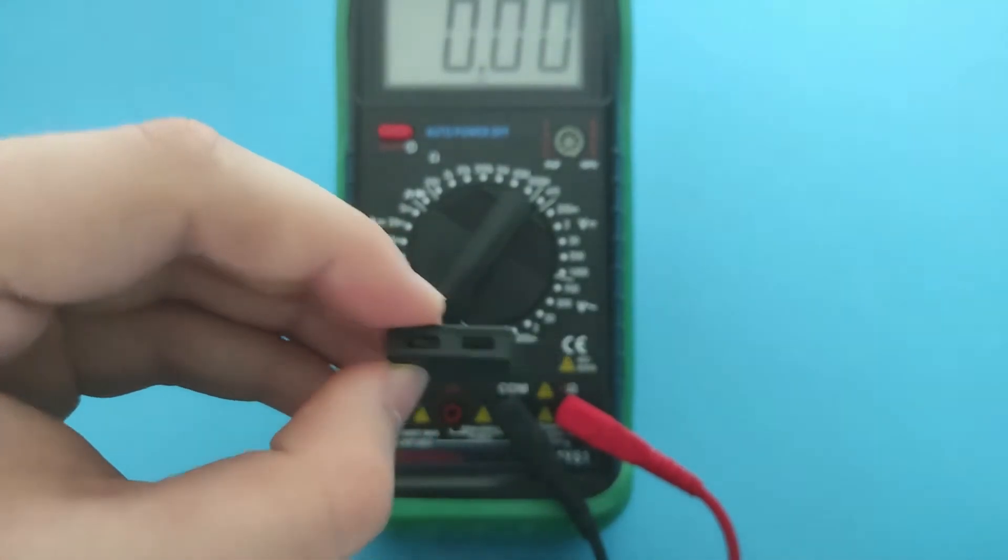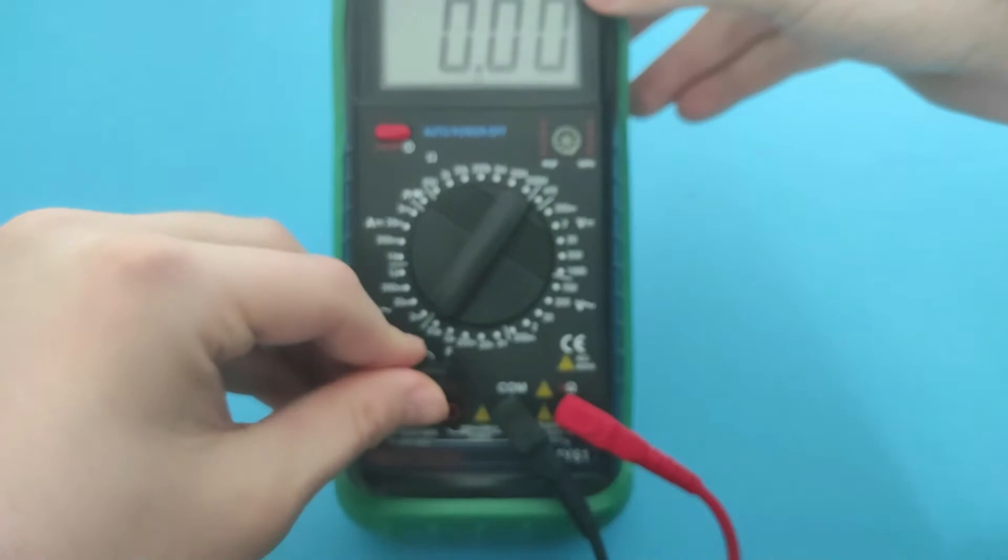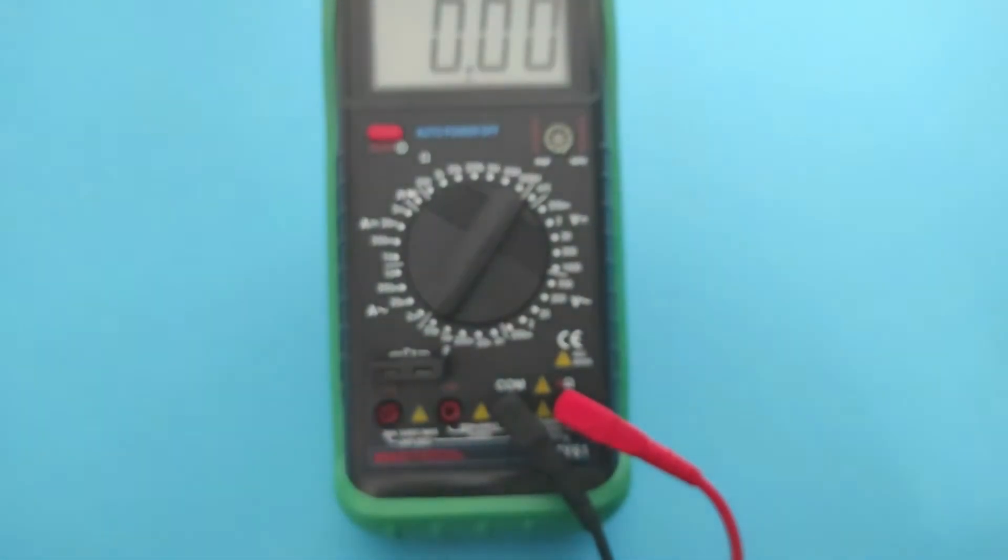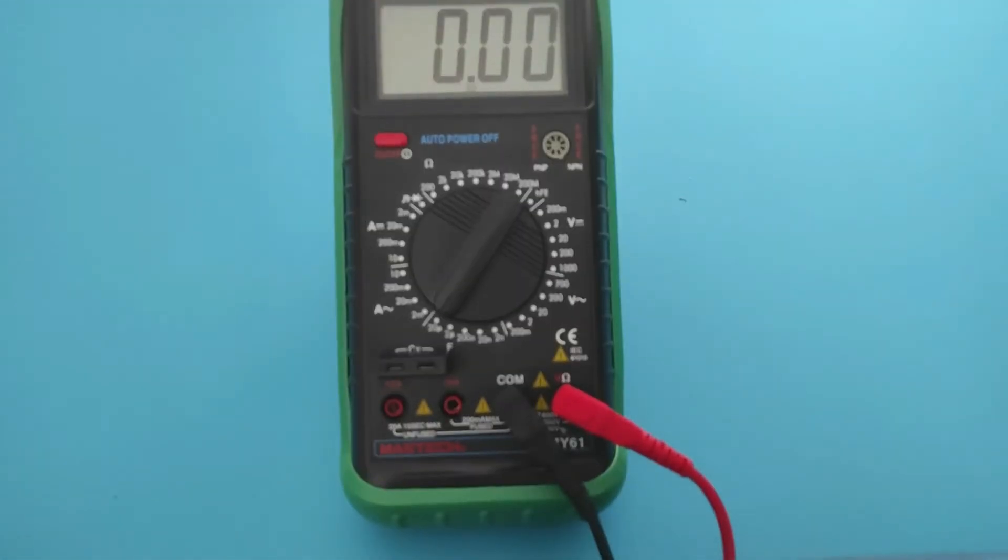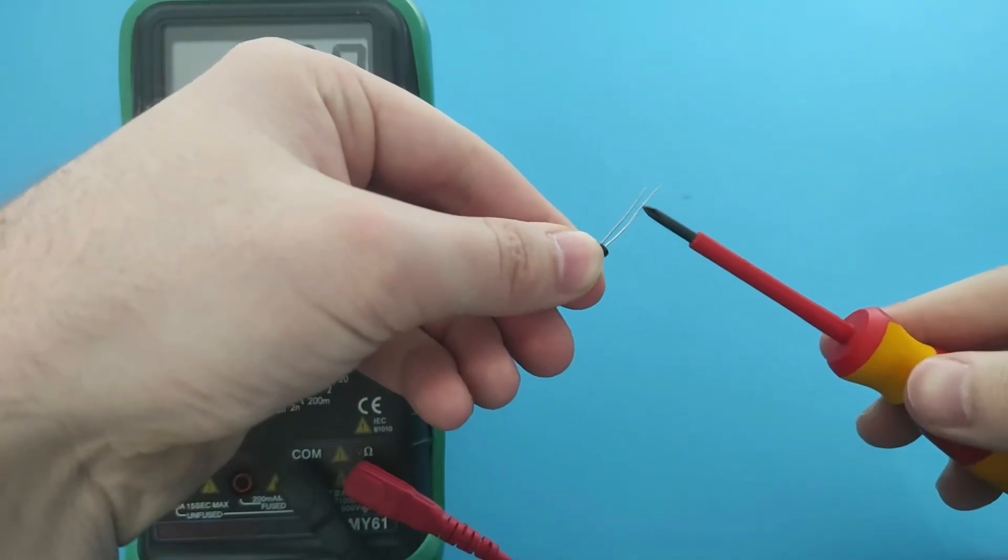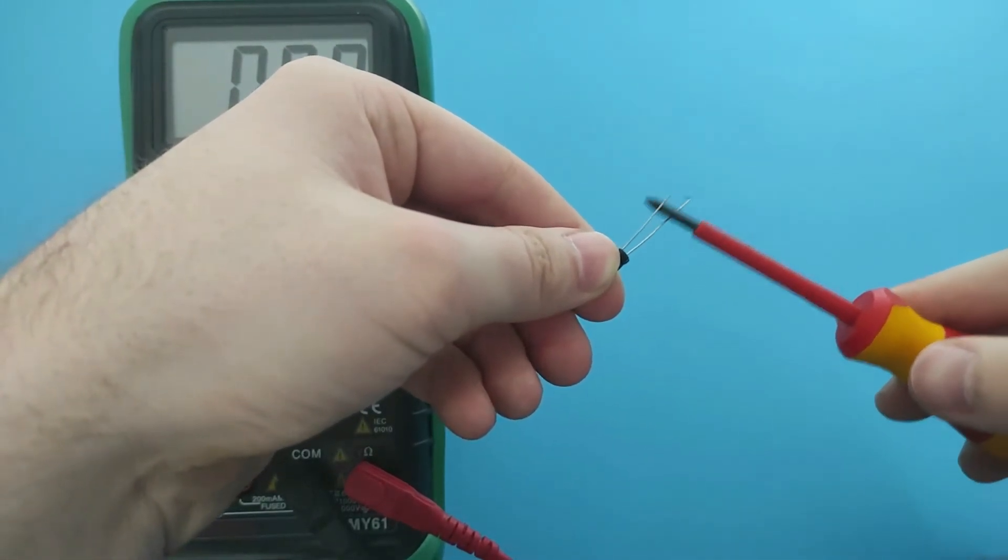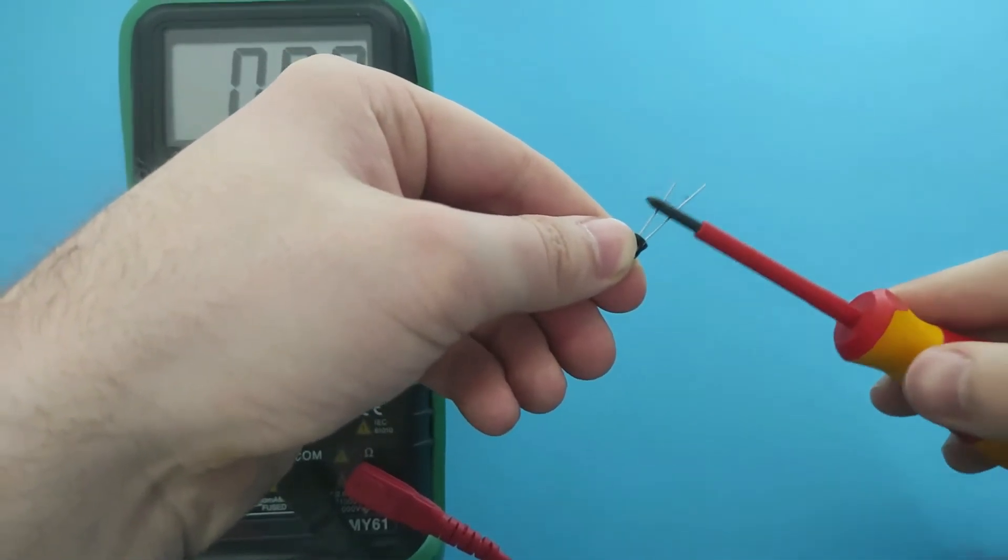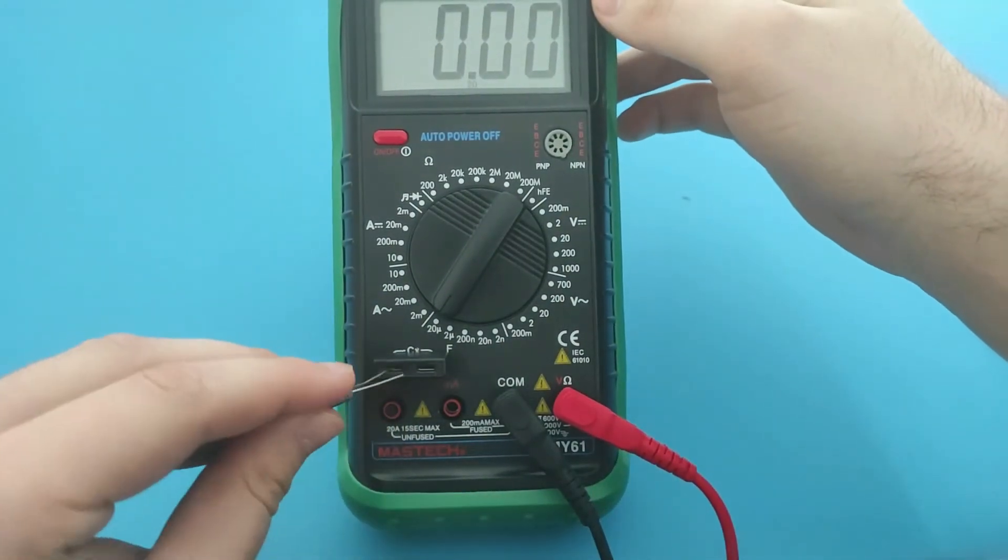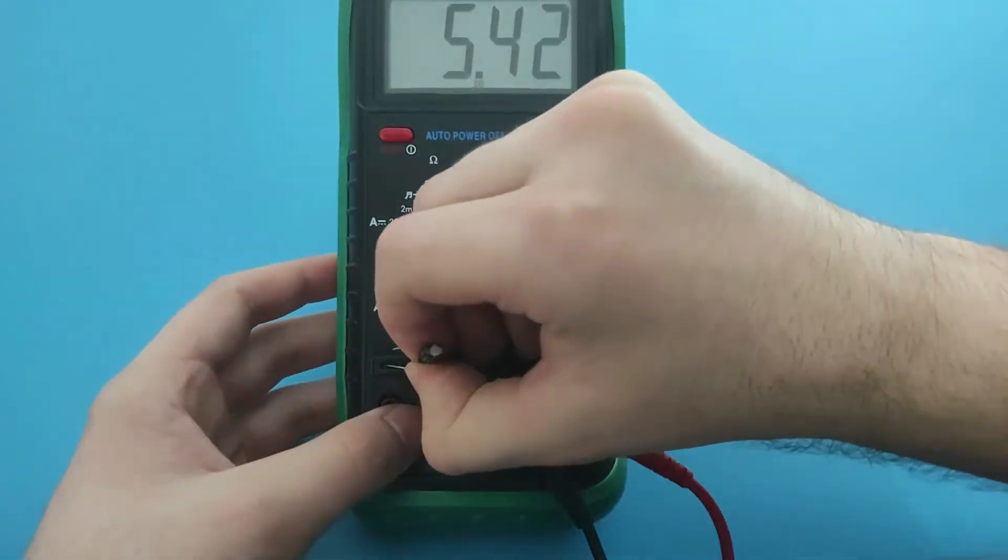To measure the capacitance, insert the capacitor connector into the CX socket. Before inserting the capacitors, be sure to drain them so as not to damage the multimeter. Use a screwdriver to connect the ends of the capacitor to let the electricity out. It will take the multimeter a few seconds to charge and measure the capacitance of the capacitor.